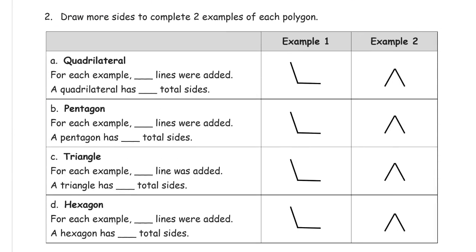Draw more sides to complete two examples of each polygon. So here's what we're looking for. We want to make these into quadrilaterals. For each example, there's two lines already. Quadrilaterals have four total sides. So I'm going to have to add two straight sides. There. Pentagon. Pentagons have five total sides. And I have two already, so I'm going to need three more. So 1, 2, 3. And 1, 2, 3.